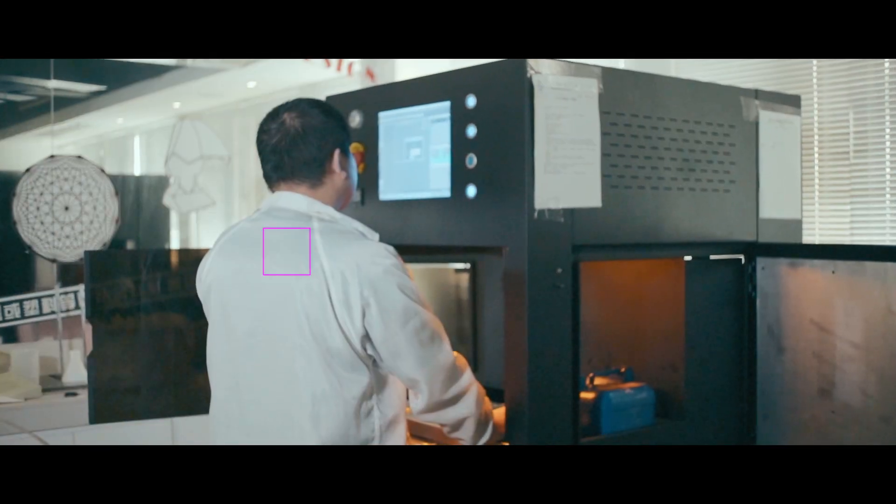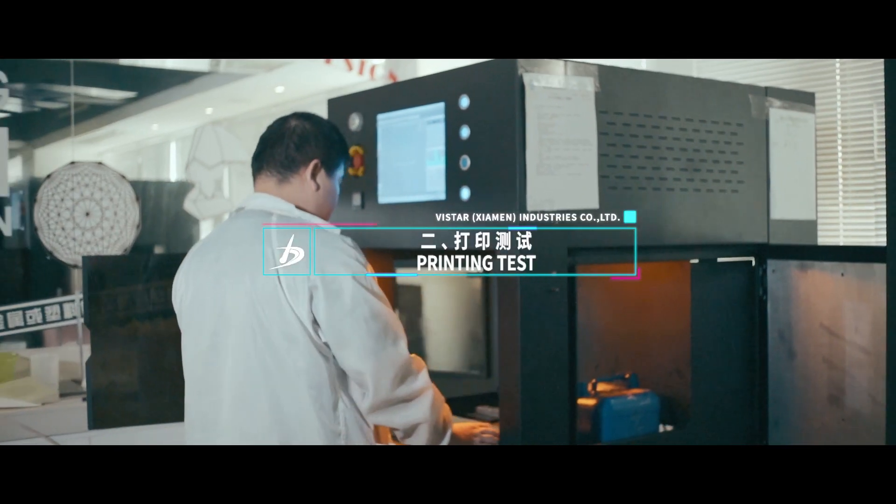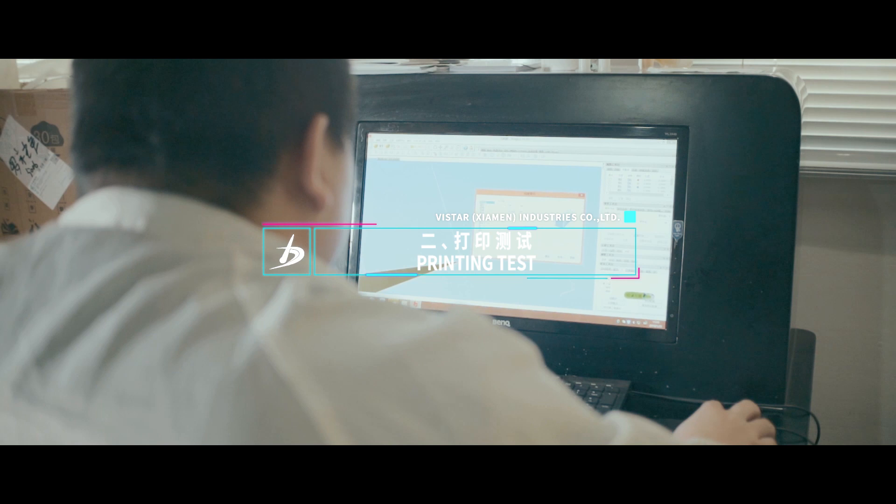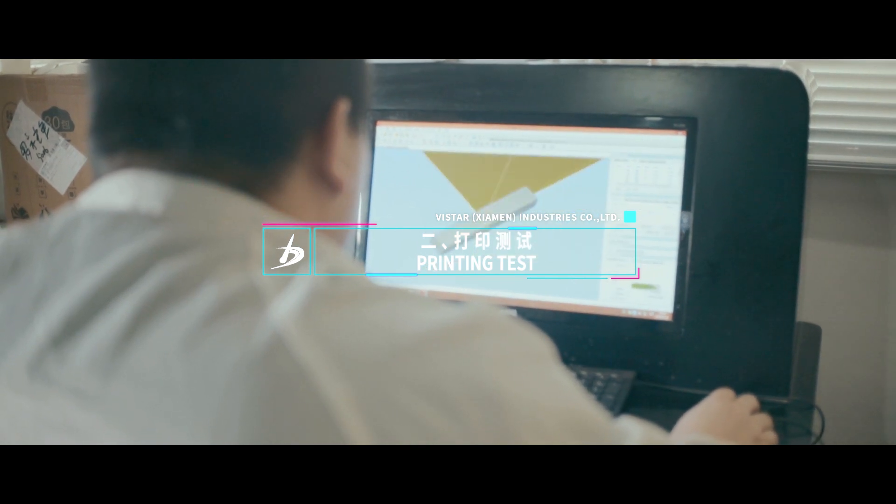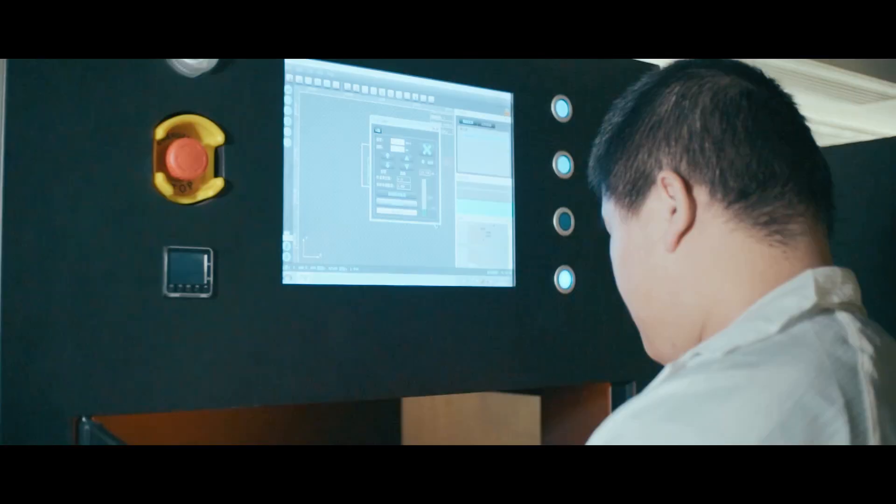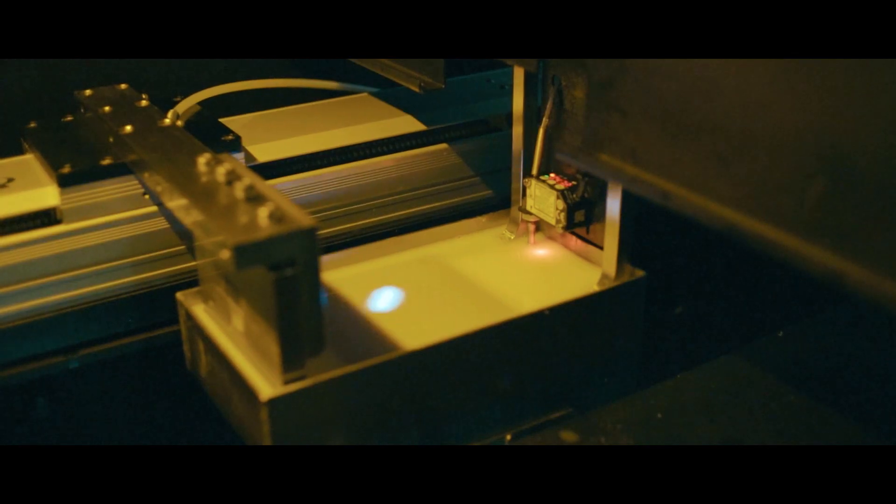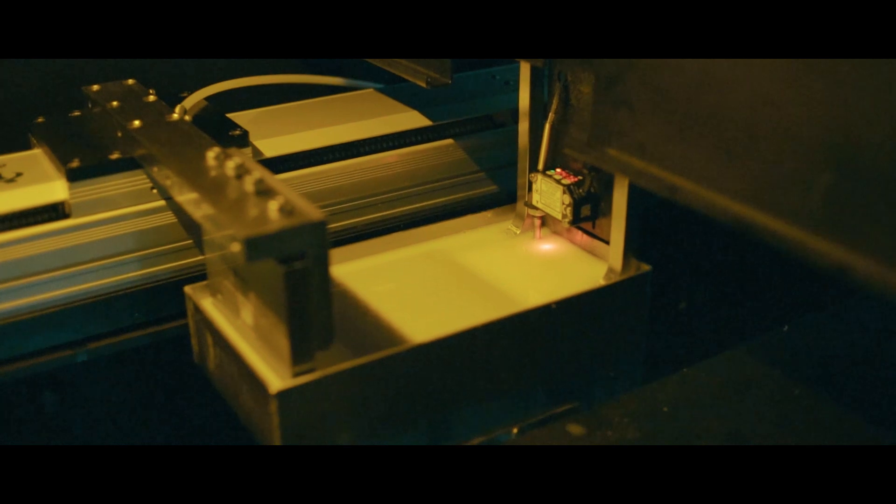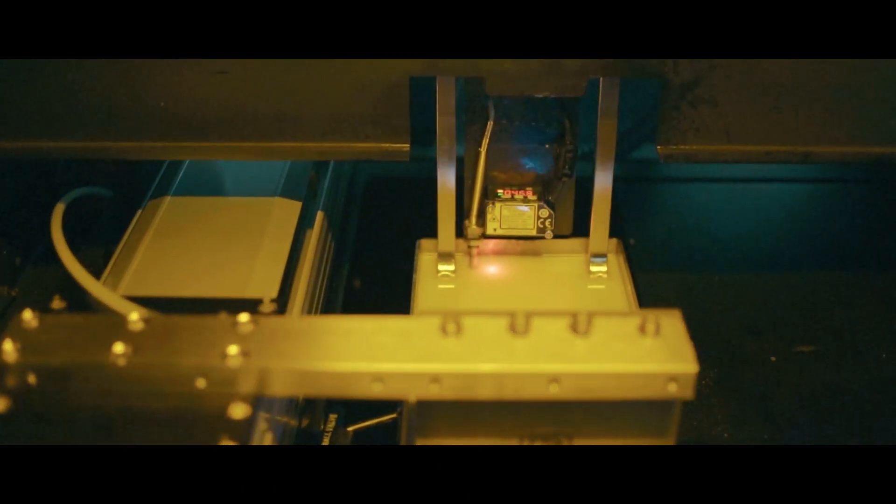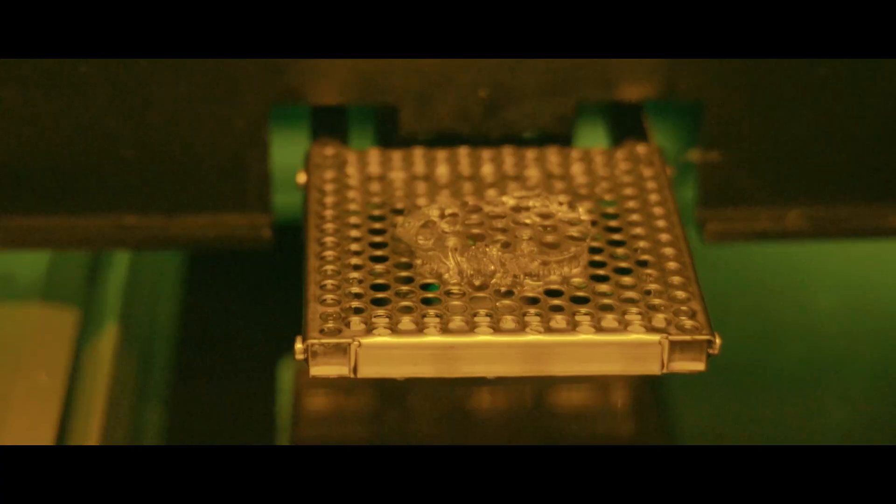The new material of photosensitive resin was developed through ProtoFab special material experimental printer. Countless printing experiments were carried out. According to each experimental data, the proportion of formulation was accurately adjusted until the ideal photosensitive resin product was debugged.